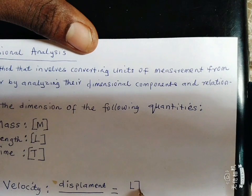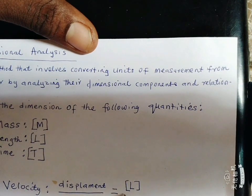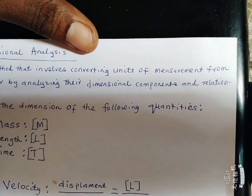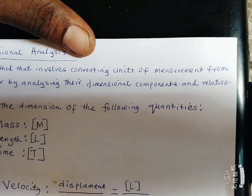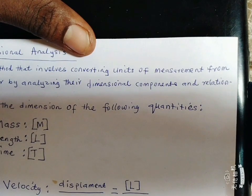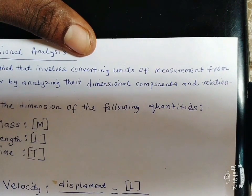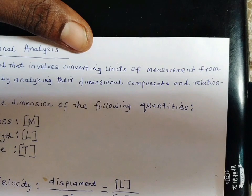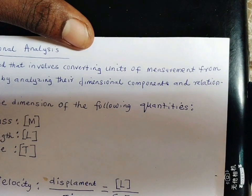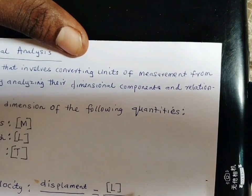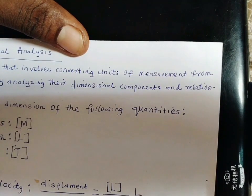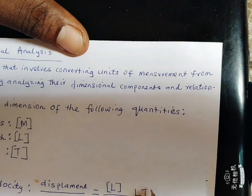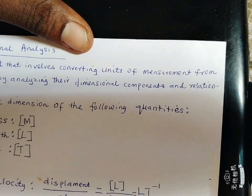Displacement is measured in length. So we use it as L. We include L. Then the division sign. Then our time is T. The dimension of velocity in brace brackets. So this becomes the dimension of velocity. Or you can still write it as L T negative 1. So this is the dimension of velocity.